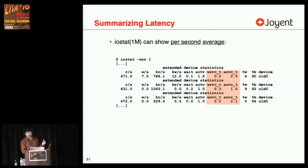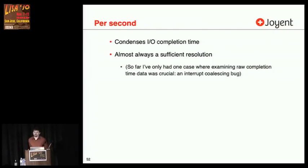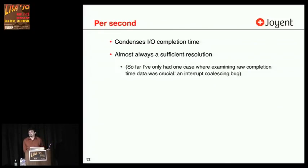iostat has the per-second averages, which are fairly useful — we've got WSVC_T for wait service time on the wait queue and ASVC_T for the active service time. Now, this doesn't have to be per second. I could represent it per 100 milliseconds if I like. In practice, it's almost always been a sufficient resolution to summarize up to one second — I've only had one case where one second was actually too big to identify a performance issue. I had a system where disk IO would occasionally have over 100-millisecond latency, and looking at the raw tuples showed that when that happened, the IO completion times were exactly the same across multiple disks, which turned out to be an interrupt issue.